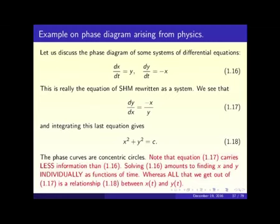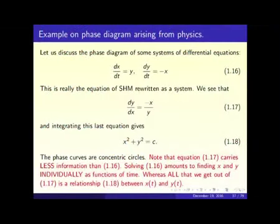Now let us look at the phase diagrams that arise in physics. Consider the simple-looking differential equation: dx/dt = y, dy/dt = -x — equation 1.16. This is really the simple harmonic motion; the equations of simple harmonic motion can be written like this with frequency ω² = 1. You can directly verify that x = sin t, y = cos t is a solution of 1.16.